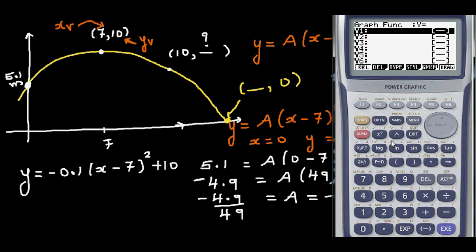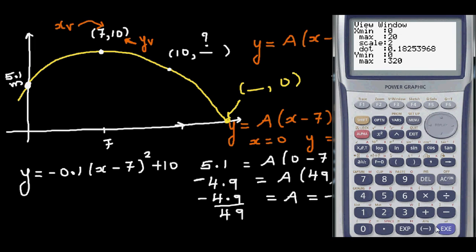So let's type in this equation: minus 0.1 bracket x minus 7 squared plus 10. And we need to change the scale. The scale I'll go from say 0 to 20, and on y I'll go from 0 to 12, scale of 2. And here's the graph.